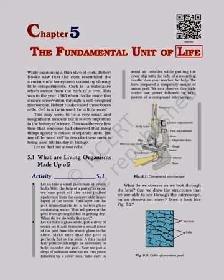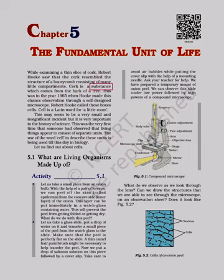The Fundamental Unit of Life. While examining a thin slice of cork, Robert Hooke saw that the cork resembled the structure of a honeycomb consisting of many little compartments. Cork is a substance which comes from the bark of a tree. This was in the year 1665 when Hooke made this chance observation through a self-designed microscope. Robert Hooke called these boxes cells. Cell is a Latin word for a little room.